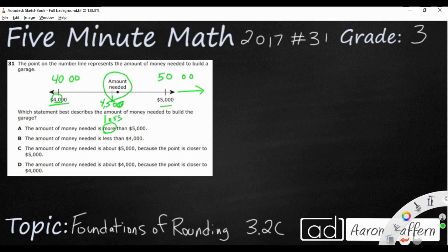That would make this sentence correct, therefore that's not it. The amount of money needed is less than 4,000? Less than 4,000 is over on this side because here's my 4,000. That's incorrect—it would be more if we wanted to use that sentence.